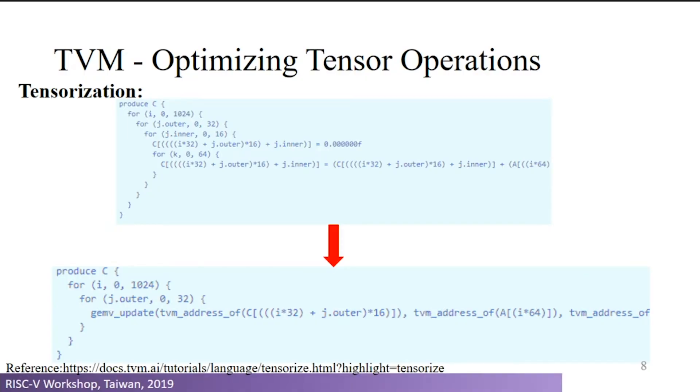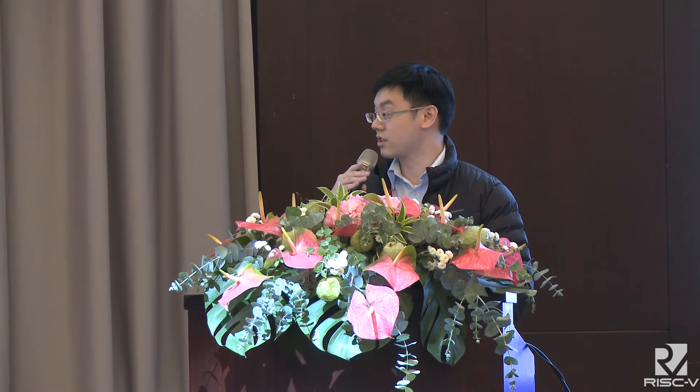Another important second-level optimization is tensorization. We can assume that a new AI chip will include instructions involving multi-dimensional data computation, such as matrix multiplies. These instructions can greatly improve hardware performance when running AI programs. It can be hard for a compiler to schedule such instructions into the code, so TVM provides tensorization — you can use a single instruction to replace multiple layers of loops. When you lower to the LLVM backend, you simply replace one intrinsic with the instruction you want to implement.